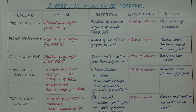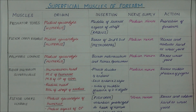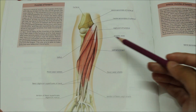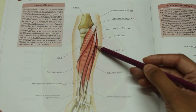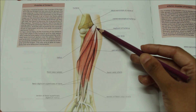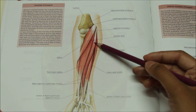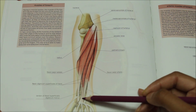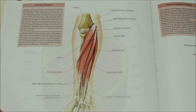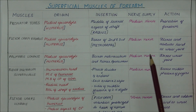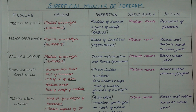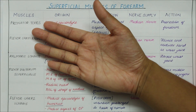Moving on to the next muscle, we have the palmaris longus. It originates from the medial epicondyle of the humerus. It inserts into the flexor retinaculum and the palmar aponeurosis. It is supplied by the median nerve. The action of the palmaris longus includes flexion at the wrist joint.